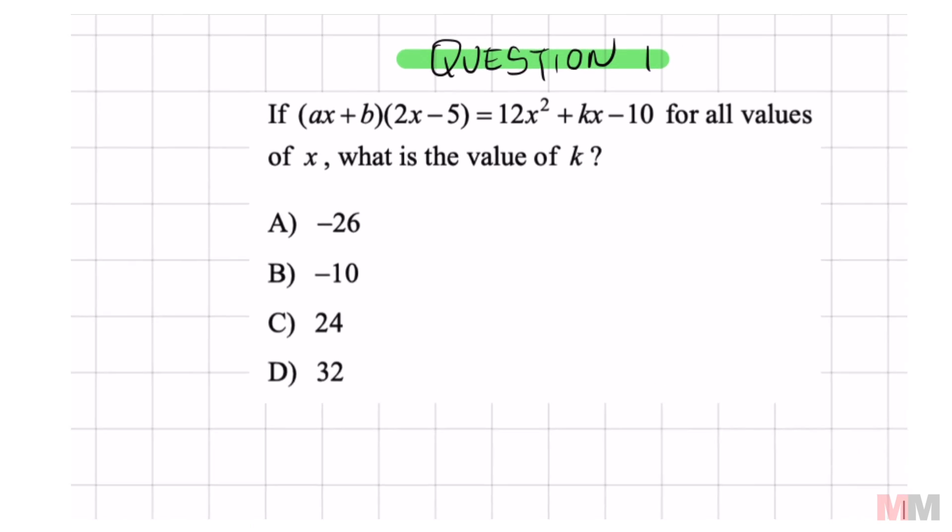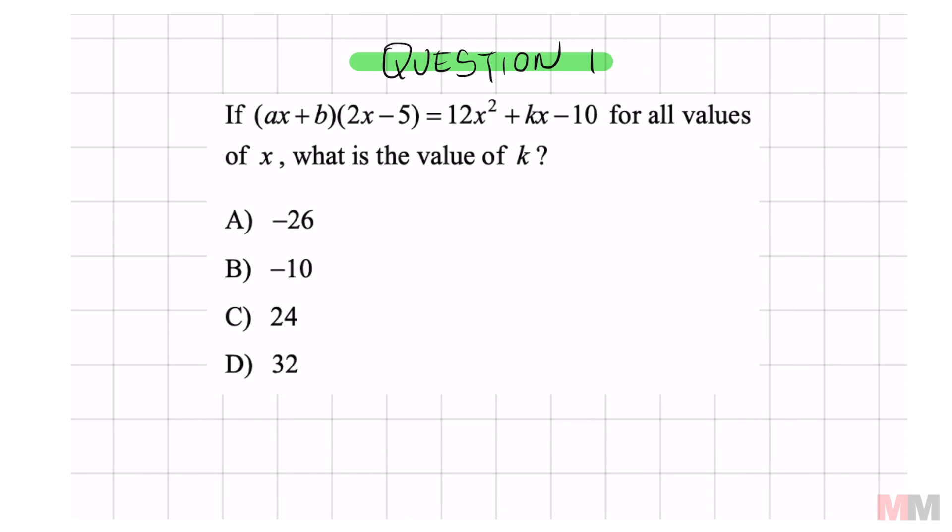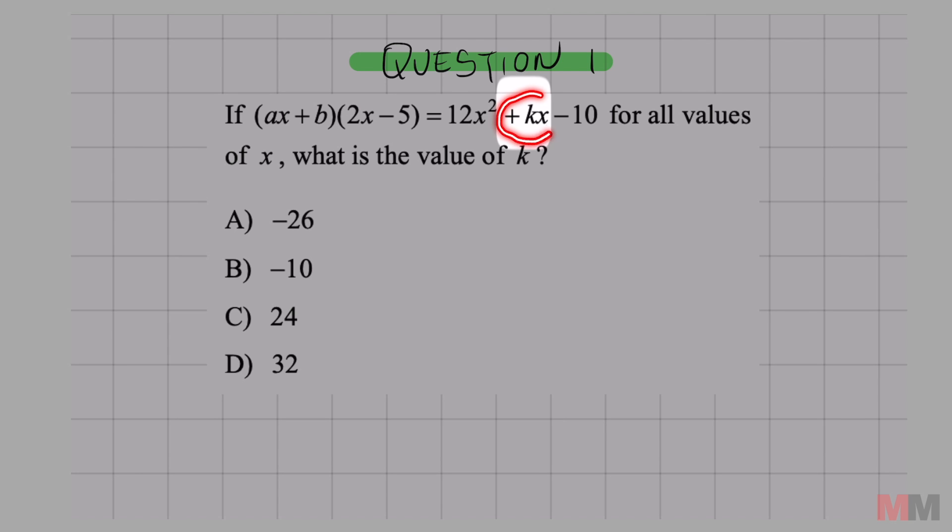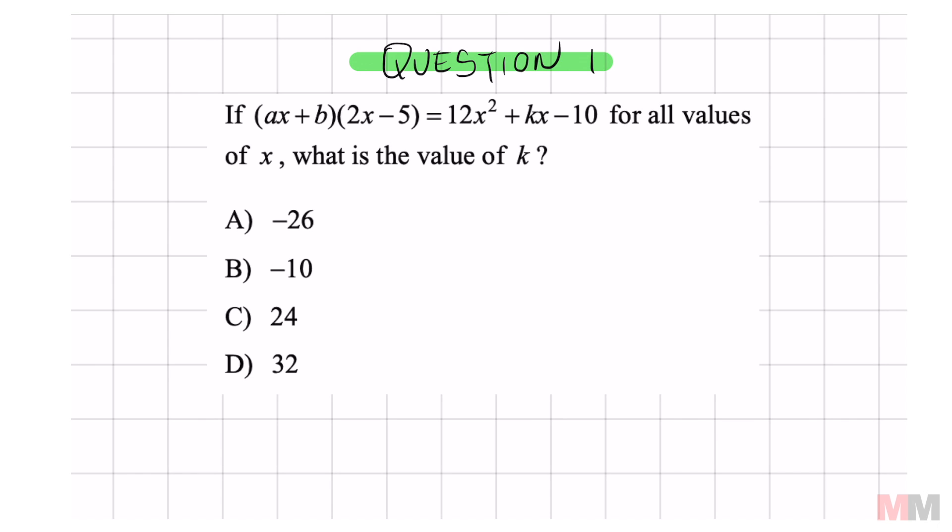Let's start off with question one. Out of 10 SATs, I've probably seen this nine or ten times. This is like their favorite question to ask. We're trying to find the value of K and if you look at K it's in the middle of the right side of the equation and that is the BX term of standard form. Kind of gives you a hint that you need to take the left side of the equation and distribute it. Let's do that.